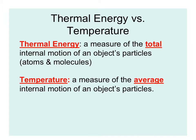Here's an important concept distinction between thermal energy and temperature. Thermal energy is a measure of the total internal motion of an object's particles — total is the key word. Temperature is a measure of the average internal motion of the object's particles. There's a big distinction between the words total and average. Thermal energy has to do with total energy; temperature has to do with average internal motion.